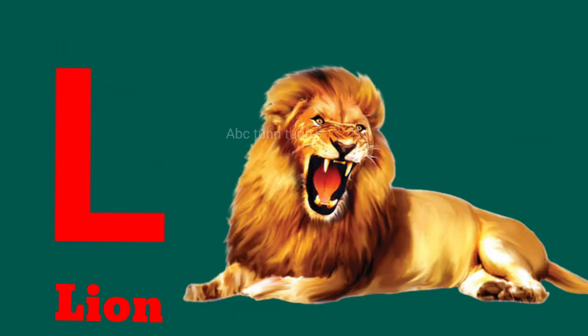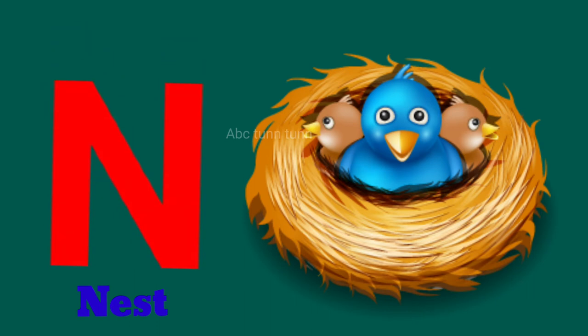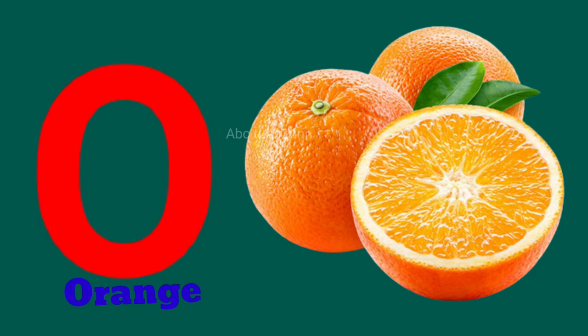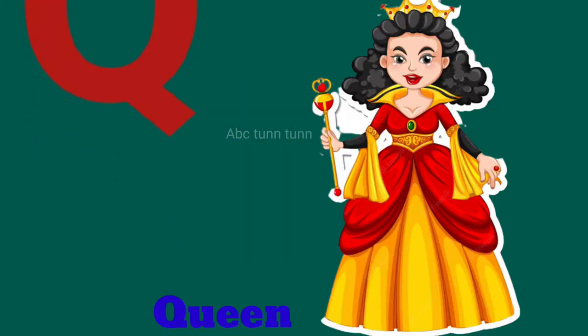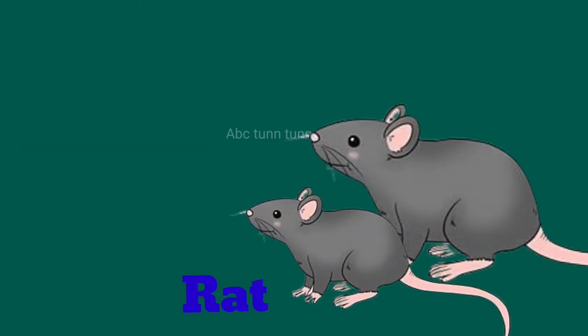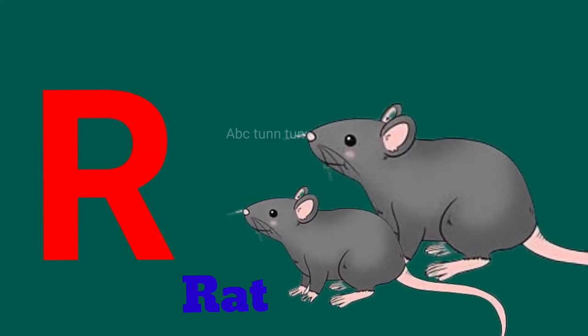L for lion. M for monkey. N for nest. O for orange. P for parrot. Q for queen. R for red.